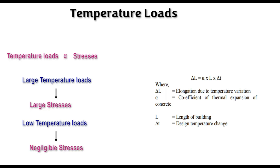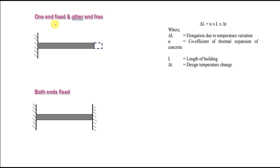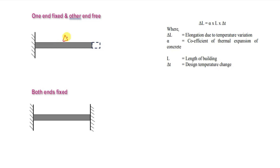Now let us look into an example of a beam and check how we can calculate the stresses due to temperature variation. We will also model the same beam in the STATPRO Connect software to compare the results. Let us start with the example of a cantilever beam, where the temperature change is delta T, the length of the beam is L, alpha is the thermal coefficient, and E is Young's modulus.